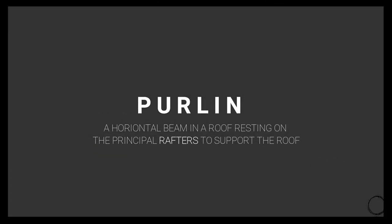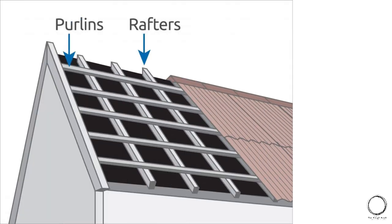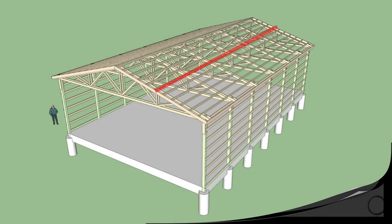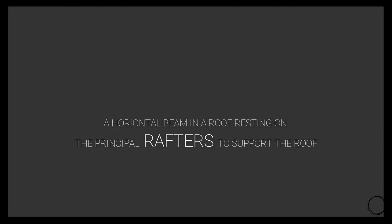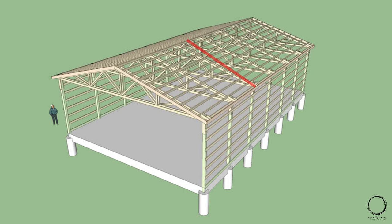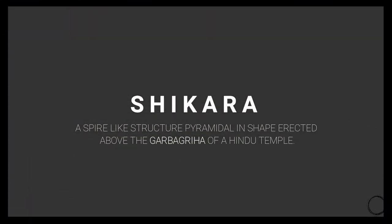The next architectural term is purlin, which means a horizontal beam in a roof resting on the principal rafters to support the roof. As you can see in the image, the purlin is the horizontal member that runs throughout horizontally and supports the roof. Rafter is the inclined/vertical member — similar to the beam-and-column relationship.